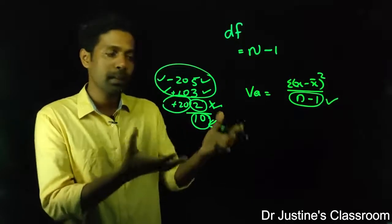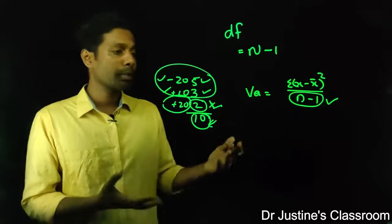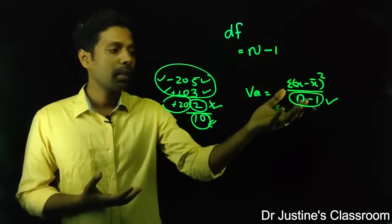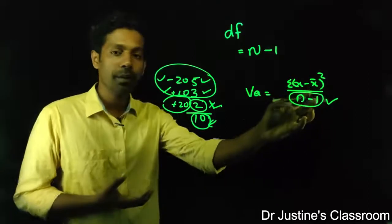So when you calculate, when you try to make any inference from data, generally that is based on a sample, right? From the sample you make inferences and you make conclusions about the population. So when you calculate the variance for a sample, this is our equation.